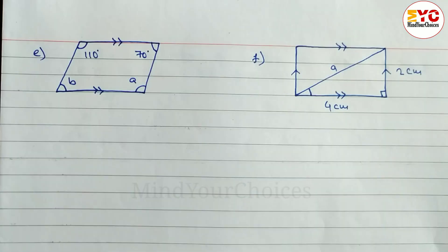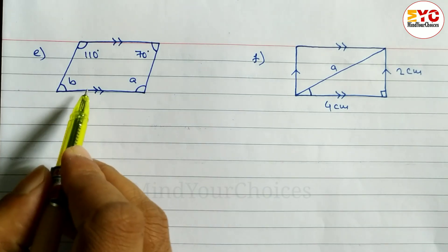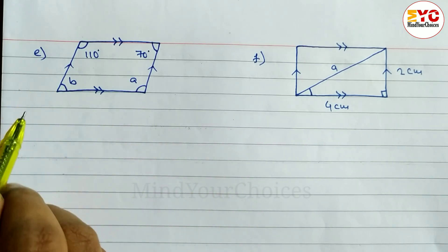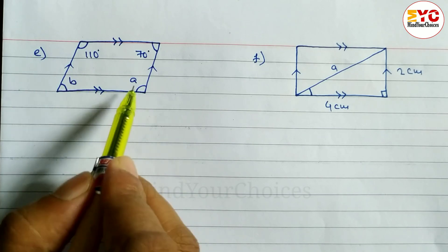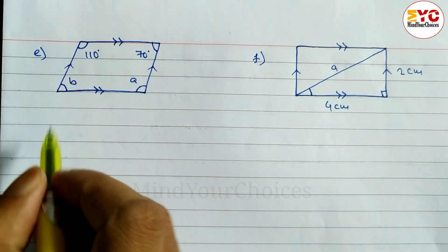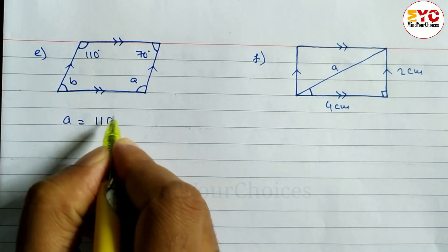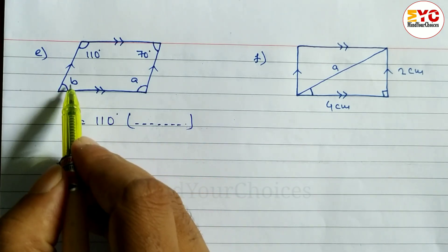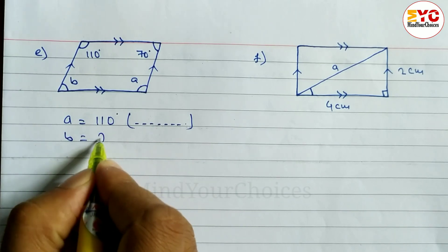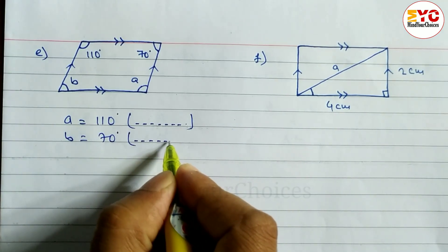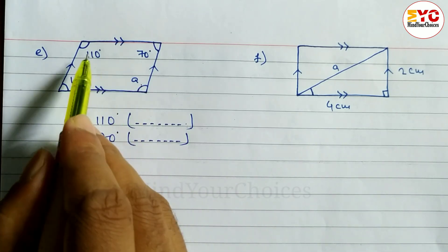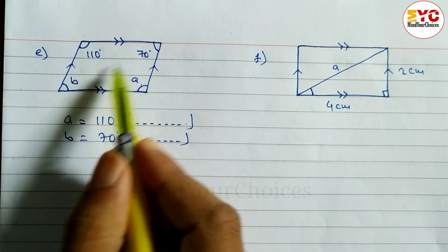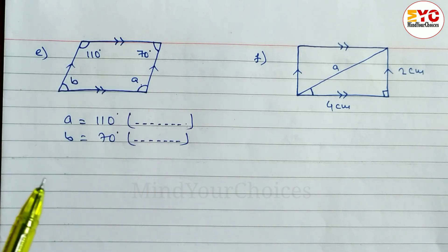Now look at question e. Here we have a parallelogram, and we have to find the value of a and b. In a parallelogram, opposite sides are equal and opposite angles are equal. Angles are given here, so a is equal to 110 degrees — reason: opposite angles of a parallelogram are equal. Similarly, b is equal to 70 degrees — reason: opposite angles of a parallelogram are equal.